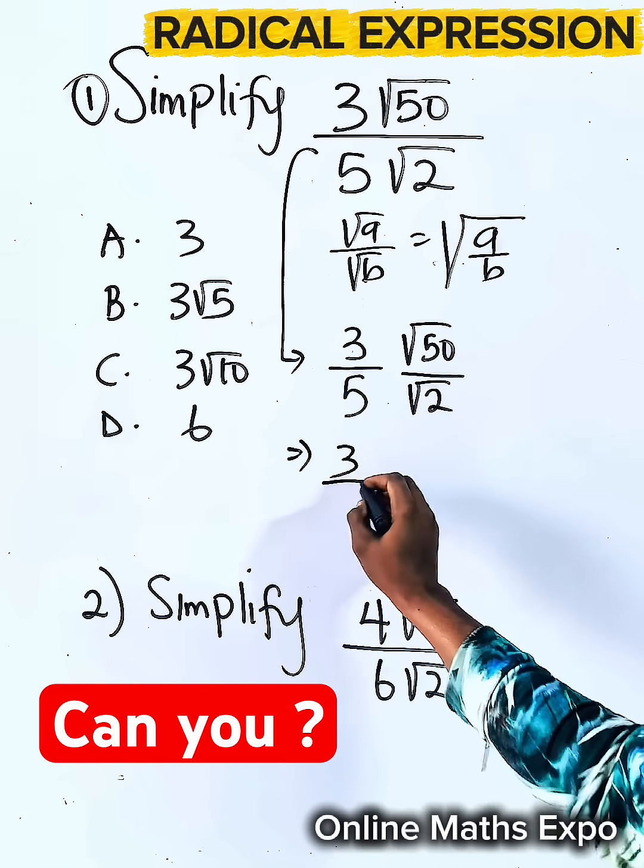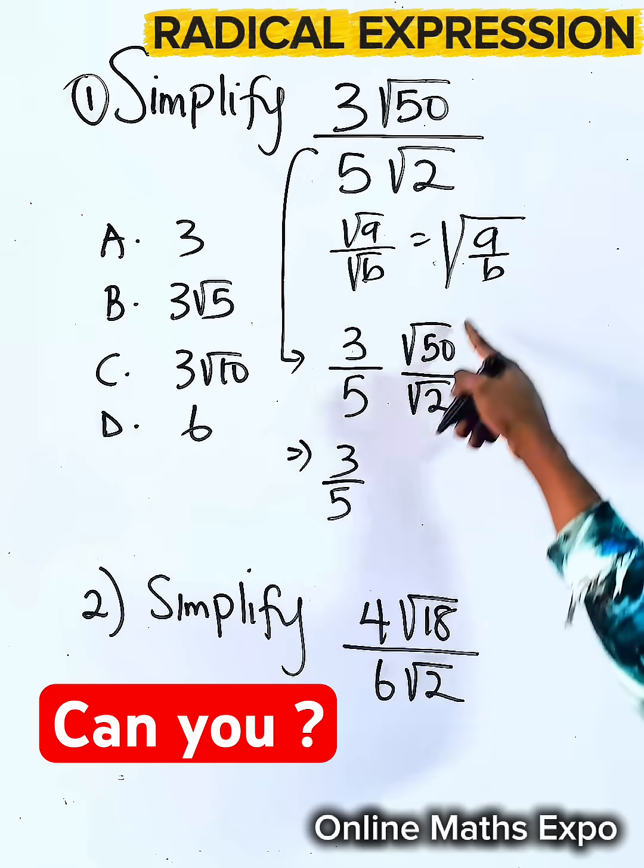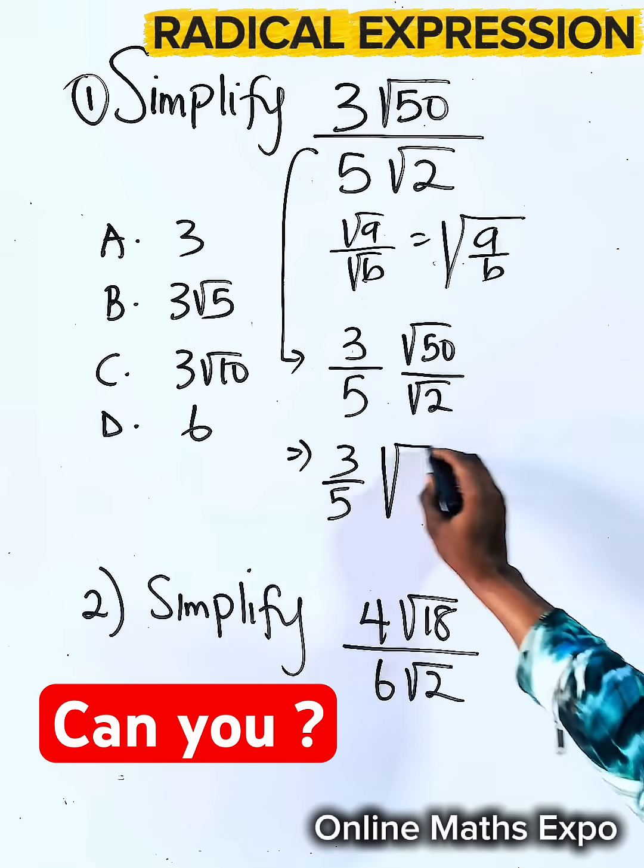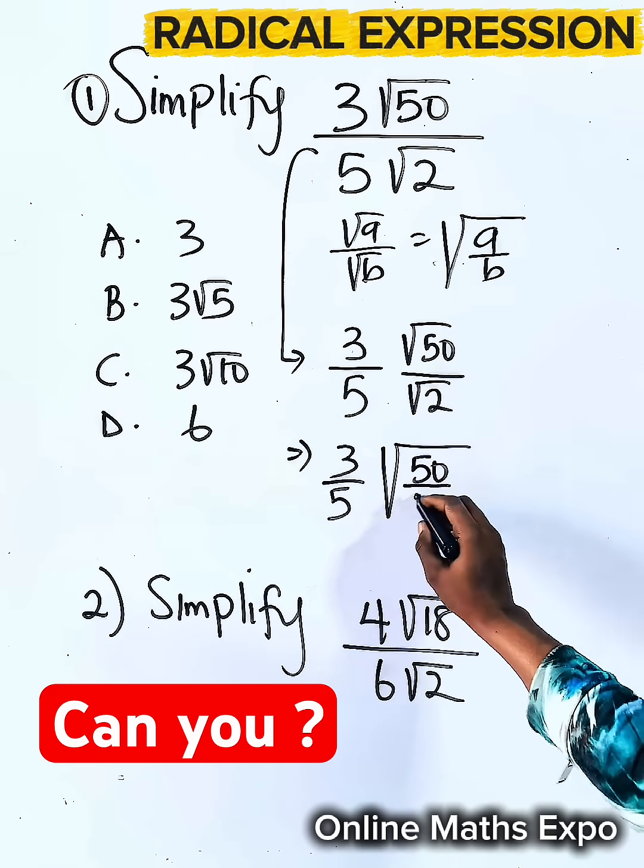So it gives us 3 on 5. Use this here. So we have square root of 50 divided by 2.